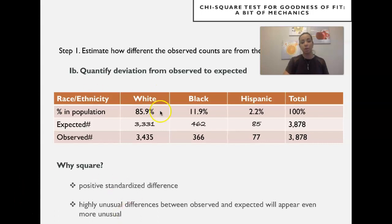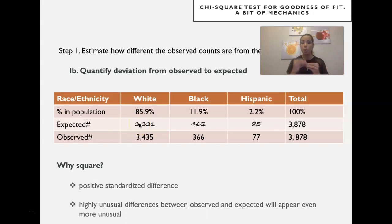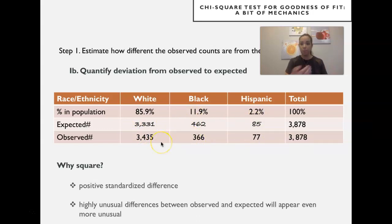We started by documenting the percentage in the population of these three different races or ethnicities. Then we computed the expected counts. Given that we have 3,870 jurors, we computed what's expected based on the proportions. We have the observed number of jurors from each race/ethnicity. One of the steps is to quantify the observed deviations by computing the deviation of each category, squaring them, dividing by the expected count, and summing all of it. That gives us a chi-square statistic that captures the total deviation observed in the dataset.